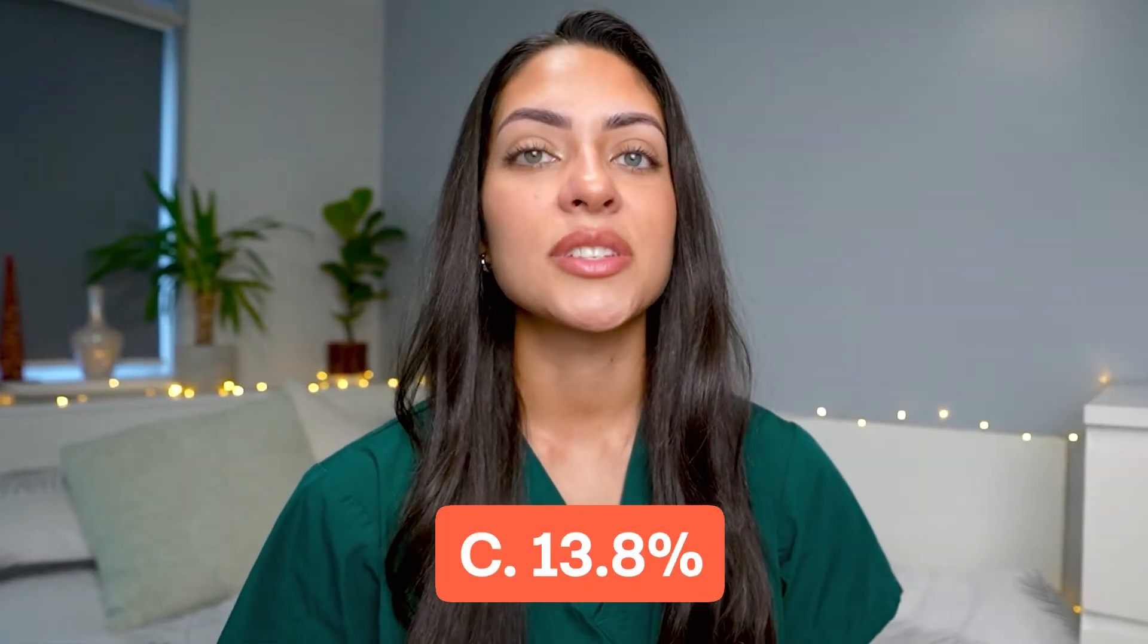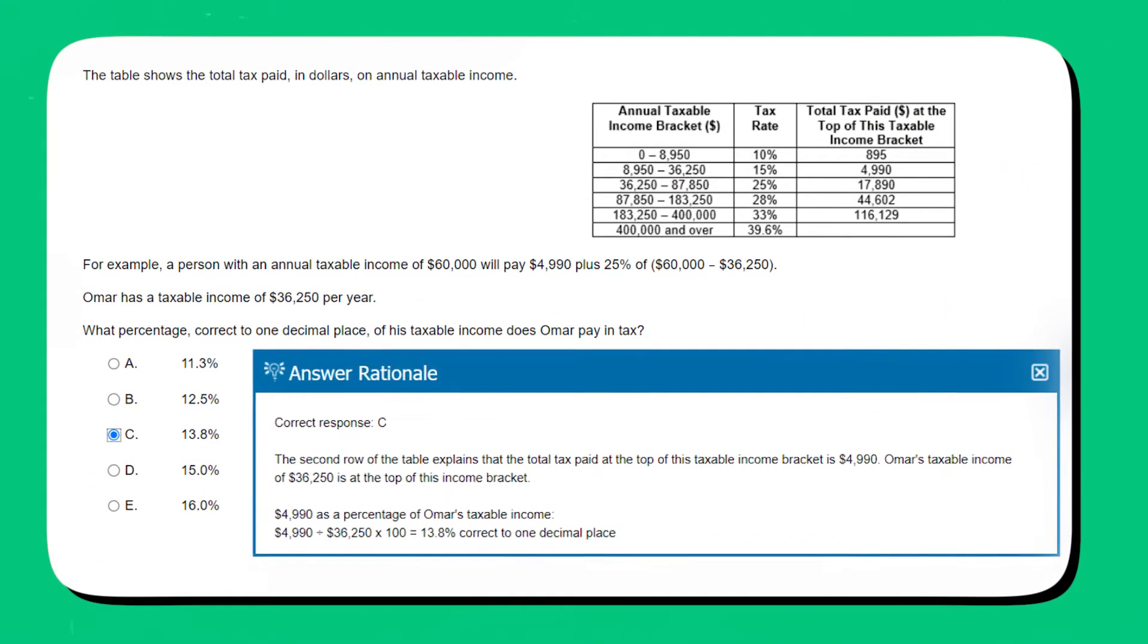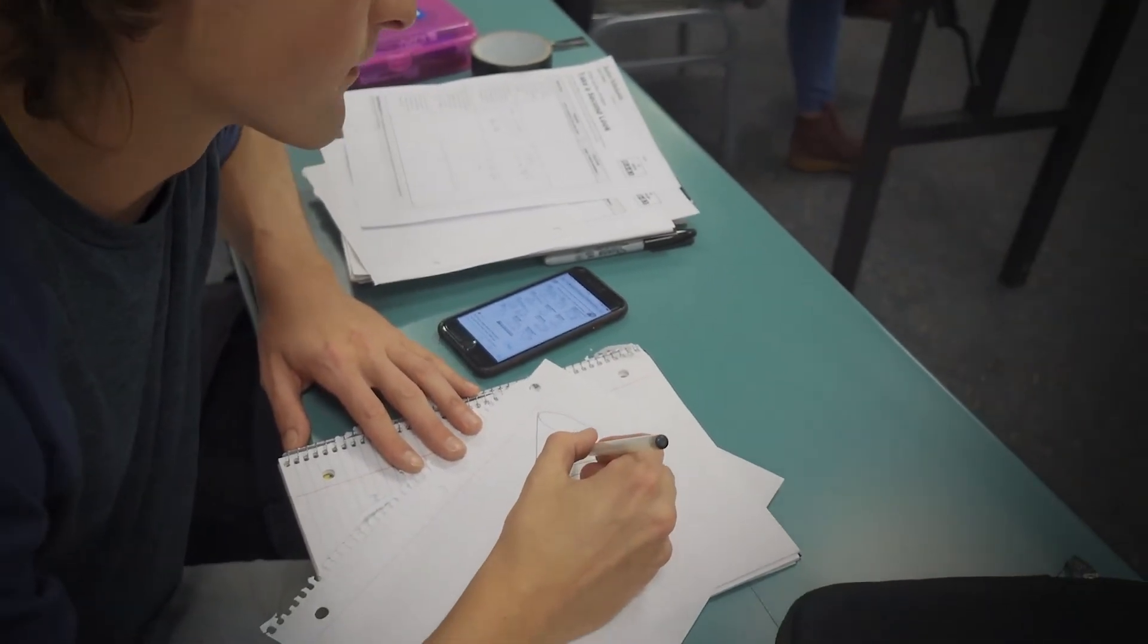The answer to this question is option C, 13.8%. Let's have a look at why. The second row of the table explains that the total tax paid at the top of this taxable income bracket is $4,990. Omar's taxable income of $36,250 is at the top of this income bracket. $4,990 as a percentage of Omar's taxable income is $4,990 divided by $36,250 times 100, which gives you 13.8% correct to one decimal place. The best way to tackle maths questions is to read the question first and then look at any data you are presented with. Scan the data to identify the key information, do any calculations you need to do, and then choose the correct option.